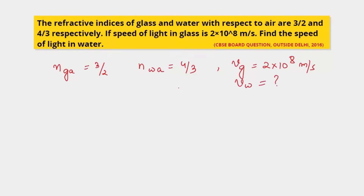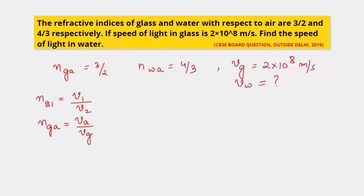We use the formula: the refractive index of the second medium with respect to the first medium equals the velocity of light in the first medium divided by the velocity of light in the second medium. Applying this for glass with respect to air, the refractive index of glass with respect to air equals the velocity of light in air divided by the velocity of light in glass.